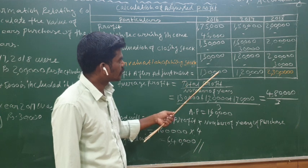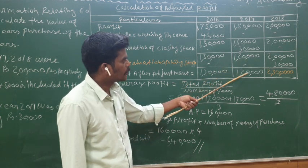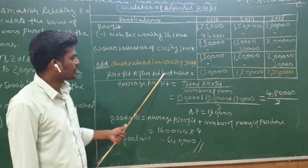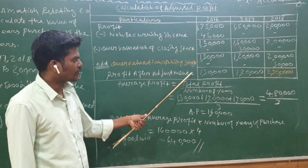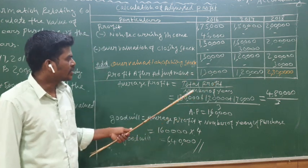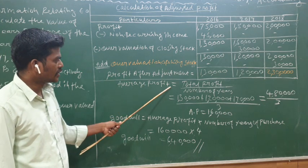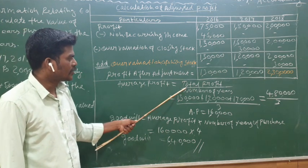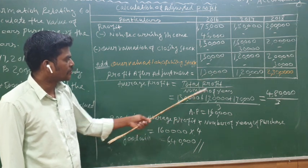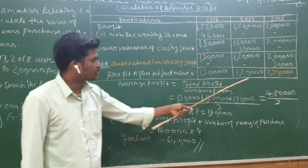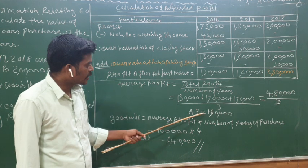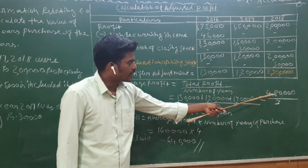So in 2016 the adjusted profit is Rs. 1,30,000; in 2017 it is Rs. 1,20,000; and in 2018 it is Rs. 2,30,000. The profit after adjustment totals Rs. 1,30,000 plus Rs. 1,20,000 plus Rs. 2,30,000, which equals Rs. 4,80,000.